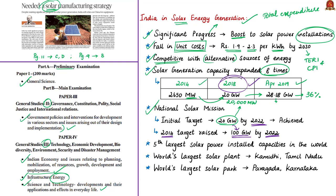India is also in the fifth position among the largest solar power installed capacities in the world. The world's largest solar plant is in India, situated in Kamudi, a town in the southern part of Tamil Nadu. The world's largest solar park is also in India, situated at Pavagada Taluk of Tumakuru district of Karnataka.